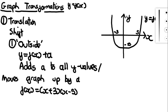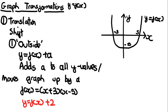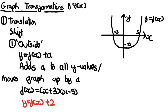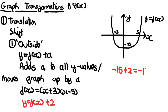Now let's draw a translated graph. Let's say a = 2, so we sketch y = f(x) + 2. We're adding a to all the y-values. A good way to sketch this is to find a set point to follow. We can take the y-intercept, which is at (0, −15), and find the transformed y-intercept by adding 2, giving minus 15 plus 2 = −13. So minus 13 is about here.